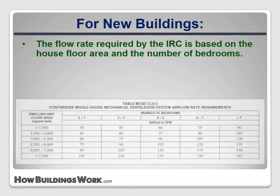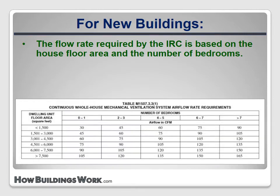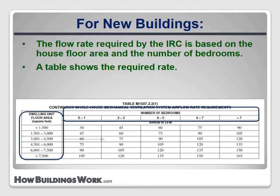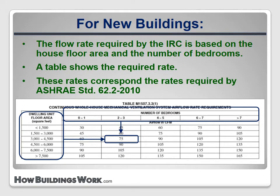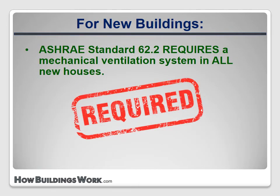A table is included that allows the required rate to be easily determined. The rates on this table are the same as those required by the 2010 version of ASHRAE Standard 62.2. But ASHRAE 62.2 requires a mechanical ventilation system in all new houses, regardless of how tight they are. Of course, this isn't code, so it's not required by law.